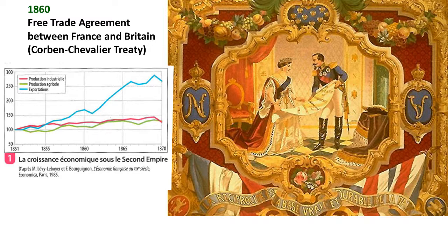By 1870, both countries had known a strong period of prosperity. Britain remained far above, but at the world scale France and Britain, alongside Germany and the USA, had really obtained an economic advance — creating a real gap between them and the rest of the world that would keep on developing for the next decades, forming a pattern by which Europe and more generally the West — Europe plus North America — could dominate the rest of the world.